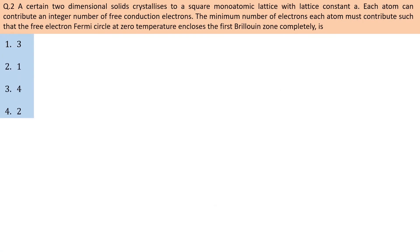A certain two-dimensional solid crystallizes in a square monoatomic lattice with lattice constant A. Each atom can contribute an integer number of free conduction electrons. The minimum number of electrons each atom must contribute such that the free electron Fermi circle at zero temperature encloses the first Brillouin zone completely is to be determined.